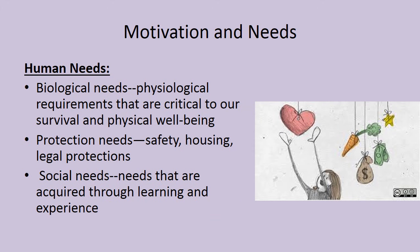Human needs, in terms of motivation, break down into three primary categories. Biological needs are physiological requirements critical to our survival and well-being — food, sleep, water, oxygen. Protection needs include safety, housing, and legal protections; if you don't have security, you really don't feel safe. And then social needs, which are acquired through learning and experience — such as having friendships, having a partner in life — any of those needs we develop over time that we begin to crave as we get older.